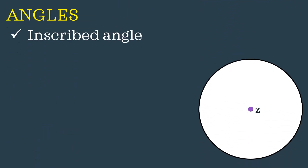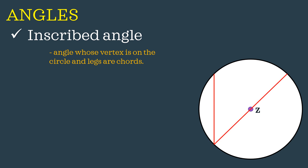Another type of angle is the inscribed angle — an angle whose vertex is on the circle and whose legs are chords. Earlier, the vertex was at the center; this time the vertex is on the circle and the legs are made up of chords. The vertex is on the circumference, and the endpoints of the legs are on the circle. We name these angles as angle JDA and also angle MBN.